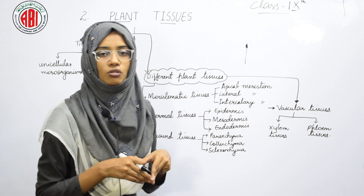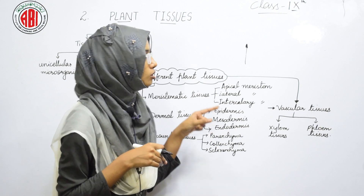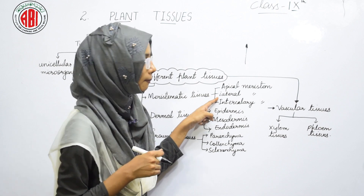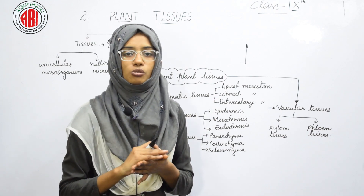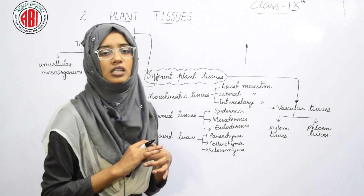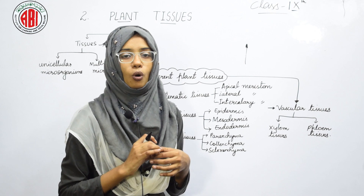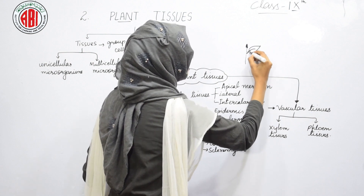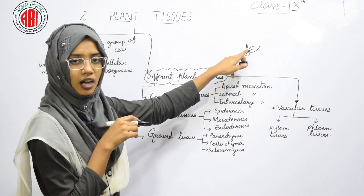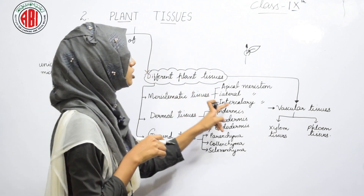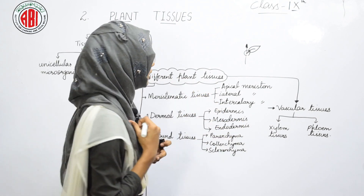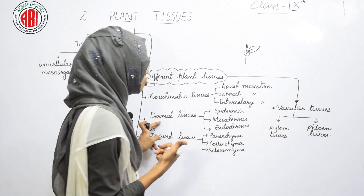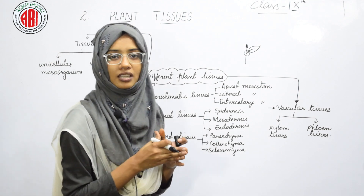Intercalary meristematic tissues, also called cambium, are found at the nodes of the plant — the nodes being the points from where leaves originate. These intercalary meristematic tissues help in forming new branches or new leaves. The next major plant tissue is dermal tissues — the group of cells present at the surface of the plant that help in providing protection and covering to the plant body.